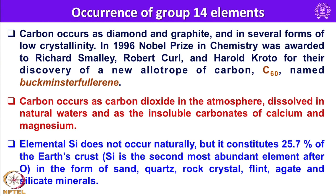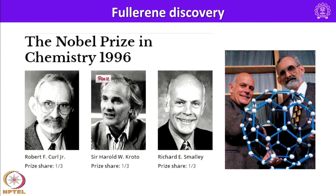Elemental silicon does not occur naturally, but it constitutes about 25.7 percent of the earth's crust. Silicon is the second most abundant element after oxygen, found in the form of sand, quartz, rock crystal, flint, agate, and several silicate minerals. These are the three scientists who won the Nobel Prize in Chemistry in 1996 for discovering fullerene: Robert Curl, Sir Harold Kroto, and Richard Smalley.